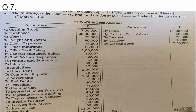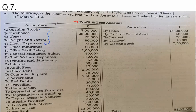We will start the discussion. First, information given on the debit side: we will take opening stock, purchases, wages, freight and octroi, and then direct expenses. All these, up to direct expenses, are part of COGS.